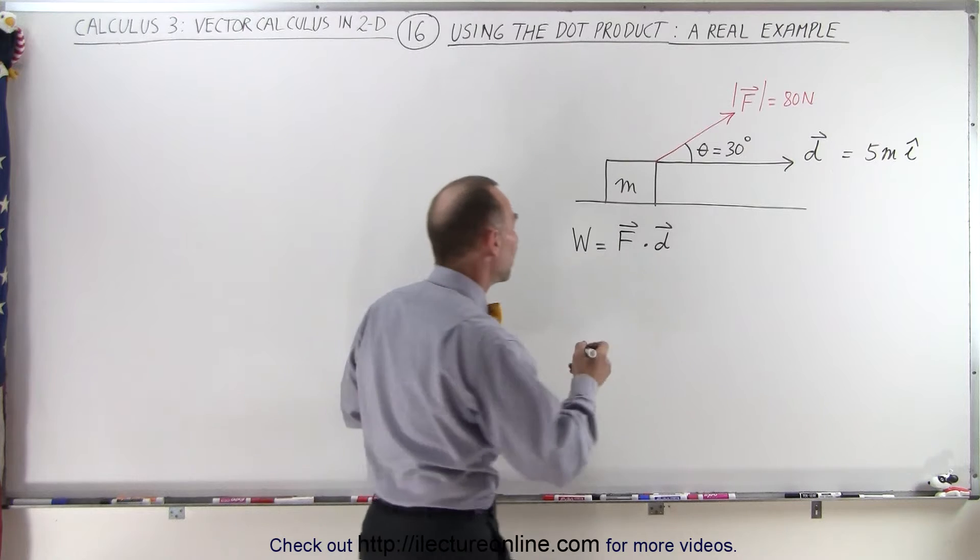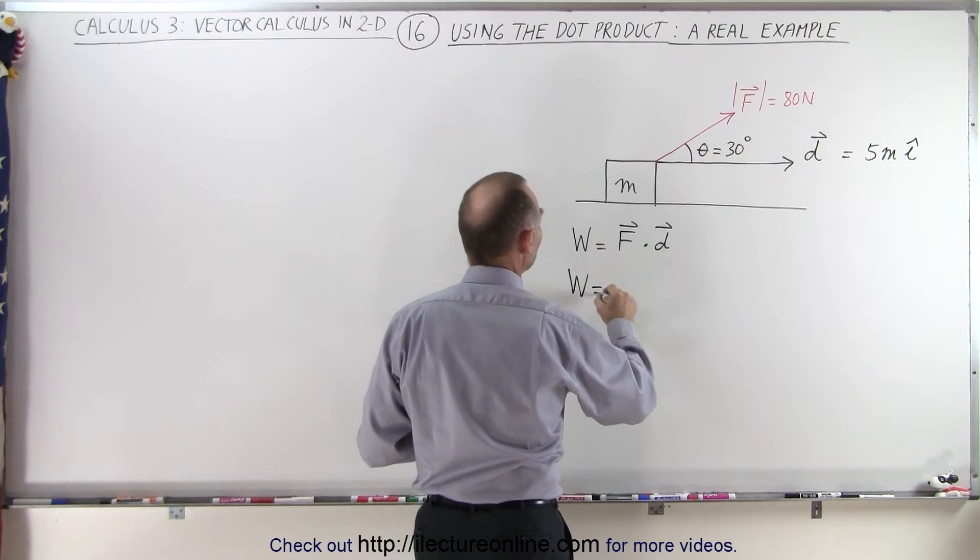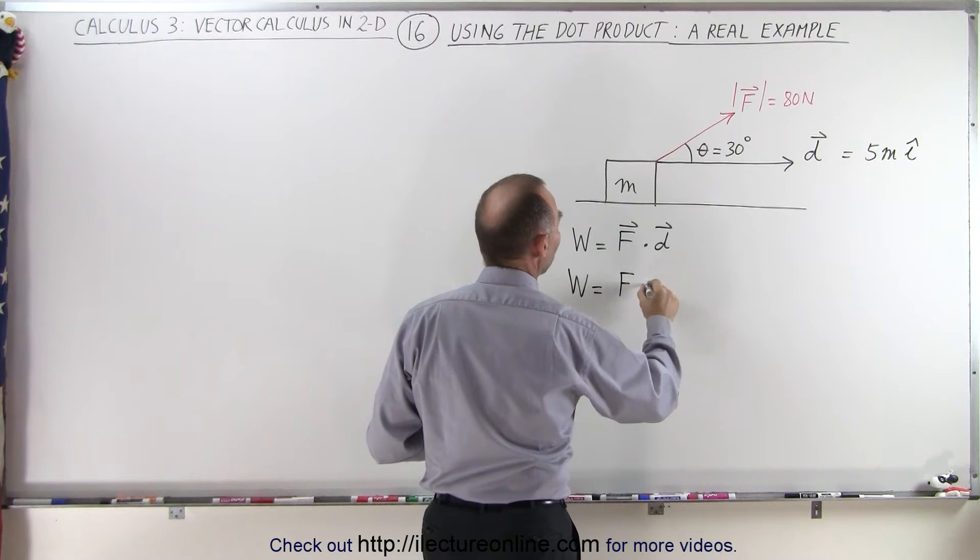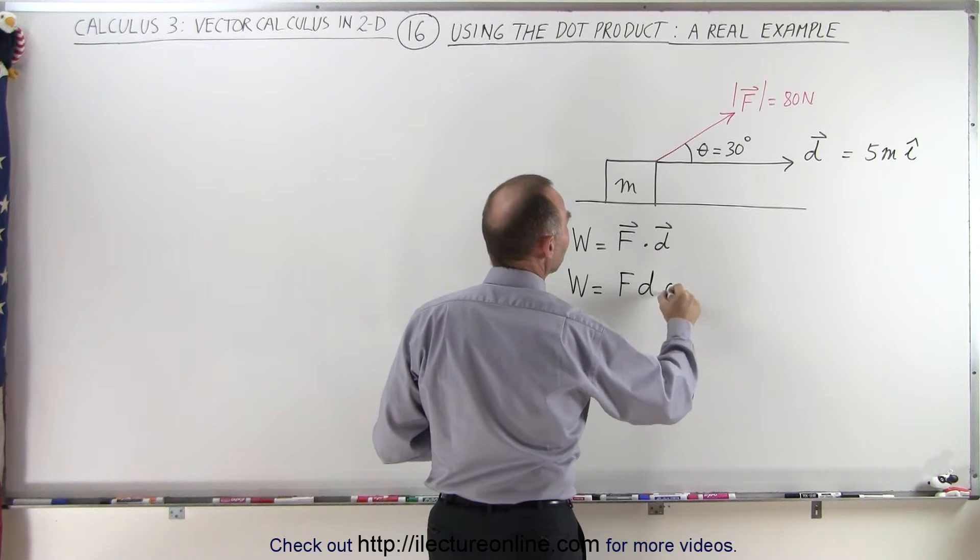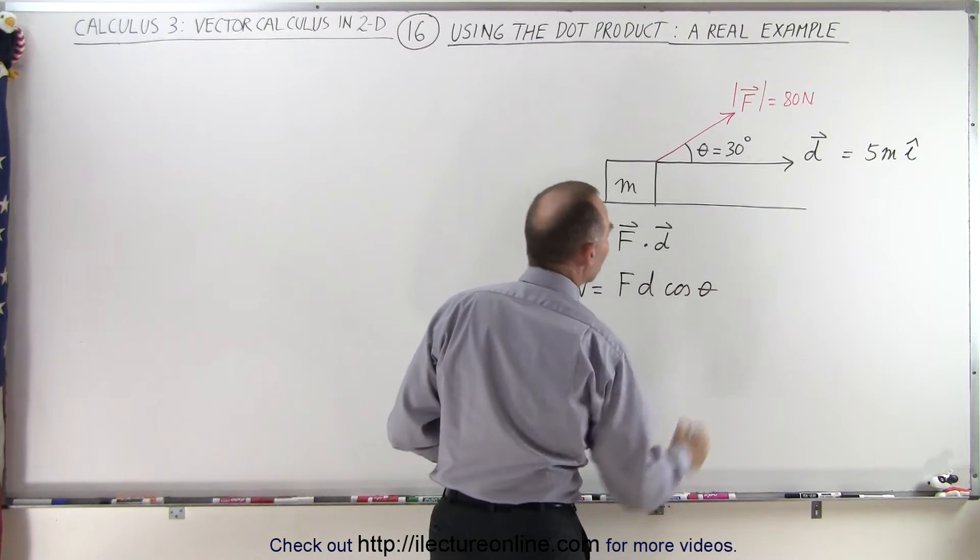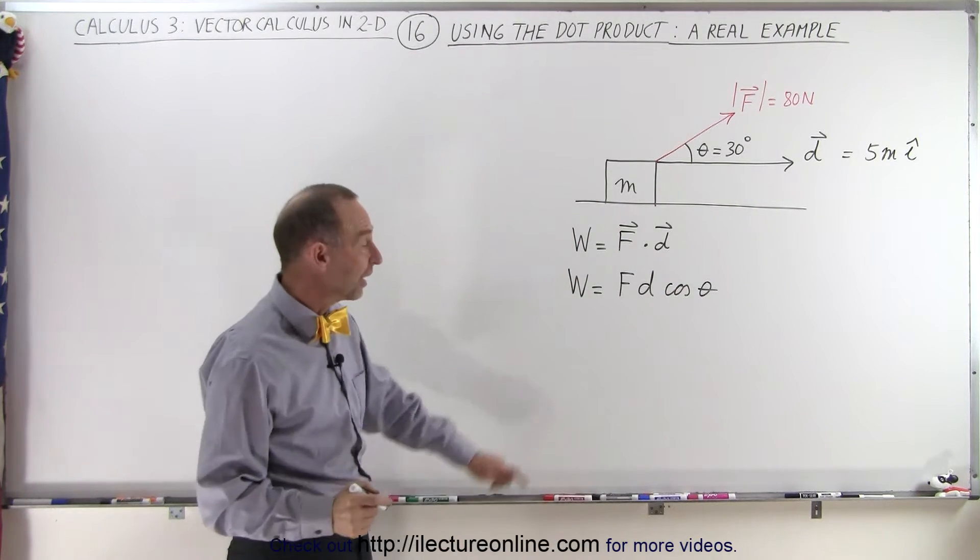According to our equation, we can say that the work done equals the magnitude of the force times the magnitude of the displacement times the cosine of the angle between the two. Notice that the work done is indeed a scalar quantity, not a vector quantity.